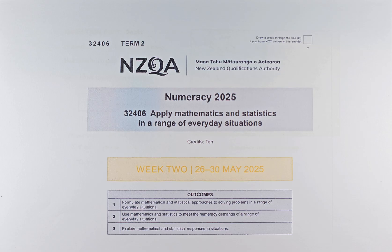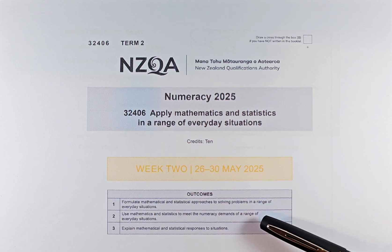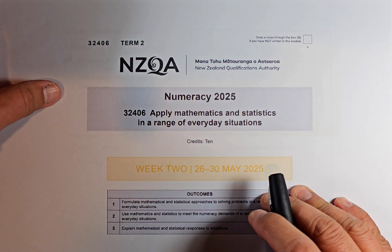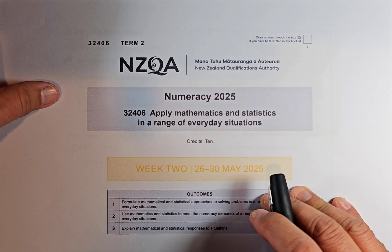In order to get achieved, you need to fulfill three outcomes: one, two and three. So if you can fulfill certain numbers of outcomes in this paper itself, then you will get achieved. So without further ado, let's do question 5a.